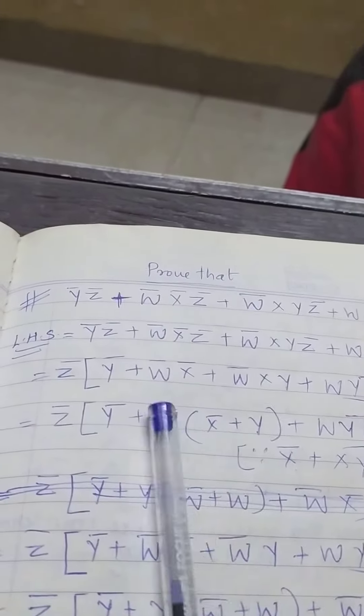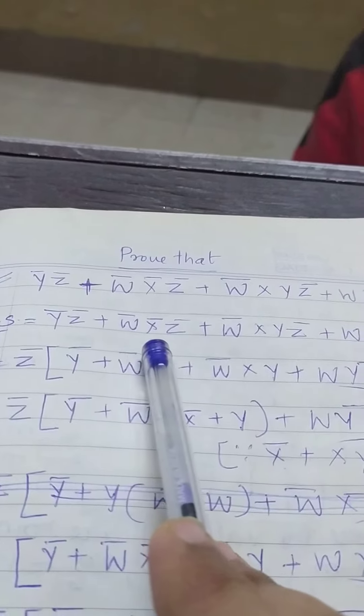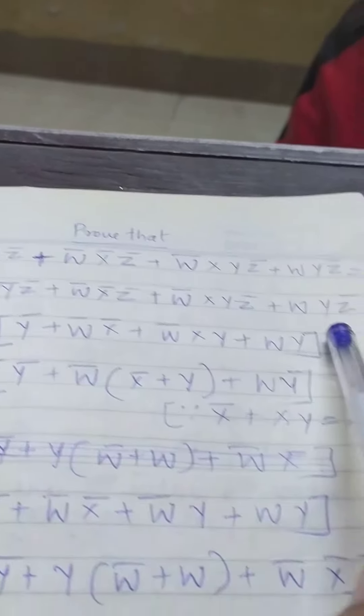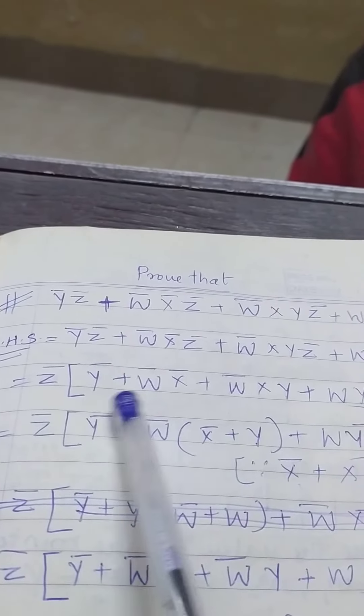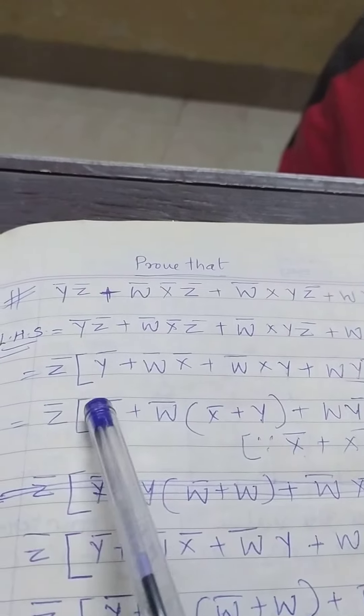I hope you are able to hear and clearly visible. So y̅z̅ + wx̅z + w̅xyz̅ + wyz̅ - this is our question and we have to prove that it is coming to z̅. So first we will take the LHS.